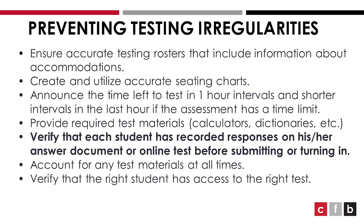Preventing testing irregularities starts with practical steps that can be taken by the test administrator. A few of these steps include ensuring accurate testing rosters that include information about accommodations, utilizing accurate seating charts, announcing time left within the assessments, providing required test materials, and verifying that each student has recorded their responses on his or her answer document or online test before submitting or turning it in.